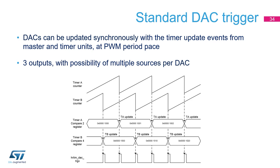The HR timer also offers DAC triggers, allowing DAC values to be updated synchronously with timer update events from the master and slave timers. This is typically used for peak current mode, where the DAC is used as a threshold for a comparator, allowing the new DAC value to be applied right at the beginning of the next switching period. Three DAC triggers are available, and it is possible to have multiple concurrent sources for the same trigger.